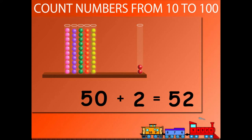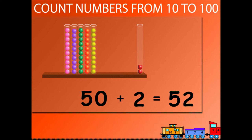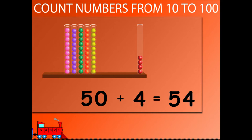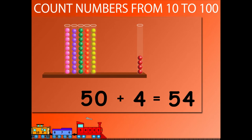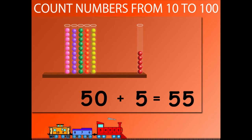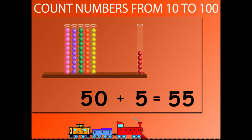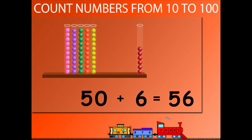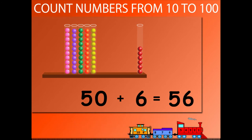50 plus 2 is equal to 52. 50 plus 3 is equal to 53. 50 plus 4 is equal to 54. 50 plus 5 is equal to 55. 50 plus 6 is equal to 56.